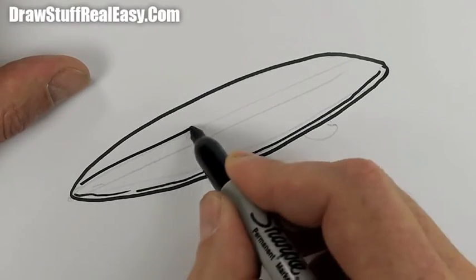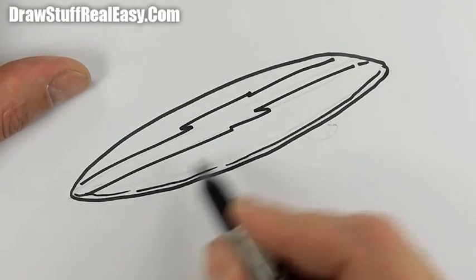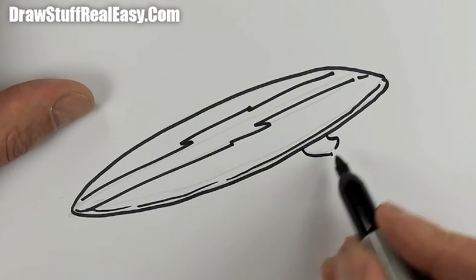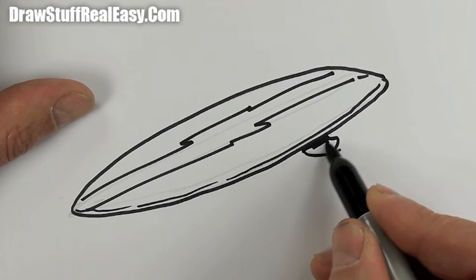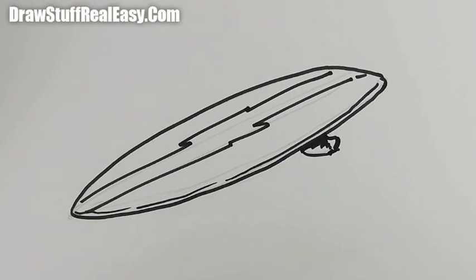Then you might want to do something like that down the middle of it and a little bit down there. The keel, that's the word I'm looking for. And there you go, how to draw a surfboard real easy.